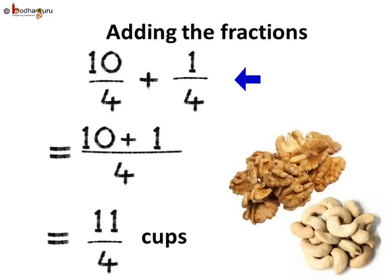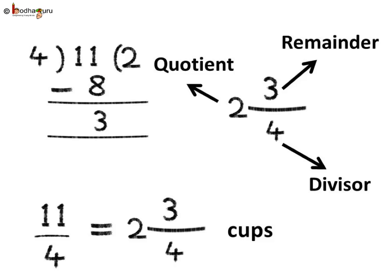Now we add 10 by 4 and 1 by 4 and we get 11 by 4. So Khushi has 11 by 4 cups of nuts. But 11 by 4 is an improper fraction, so let us convert it to a mixed fraction. We divide 11 by 4. Two 4's are 8, so we subtract 8 from 11 and 3 is the remainder. So Khushi has a total of 2 — the quotient — and 3 by 4 — the remainder upon divisor — which is 2 and 3 fourth cups of nuts.